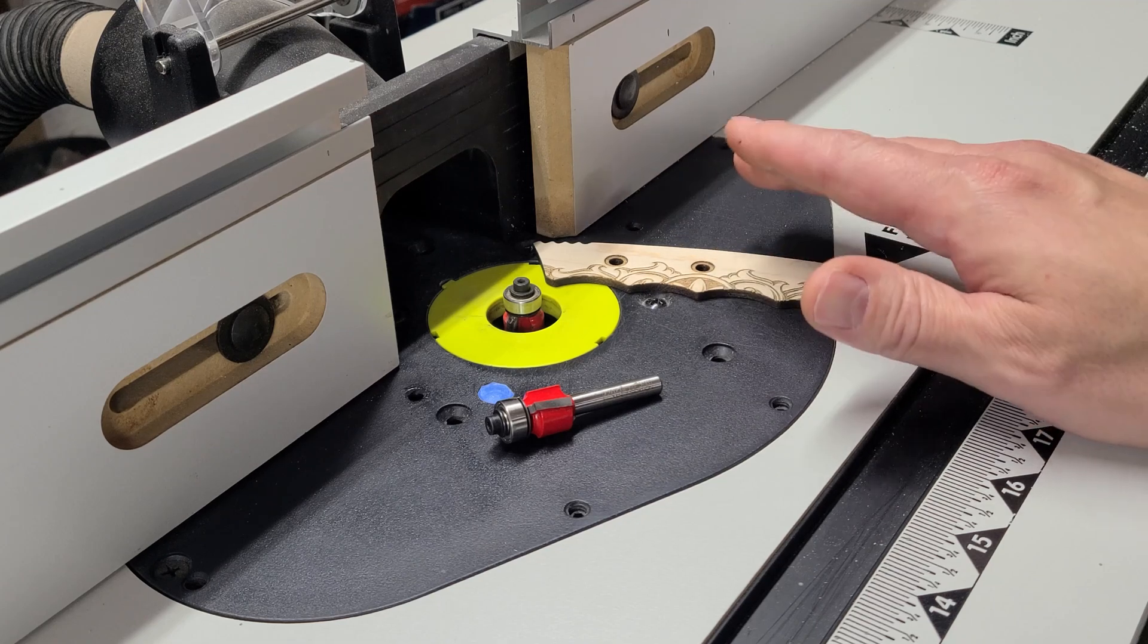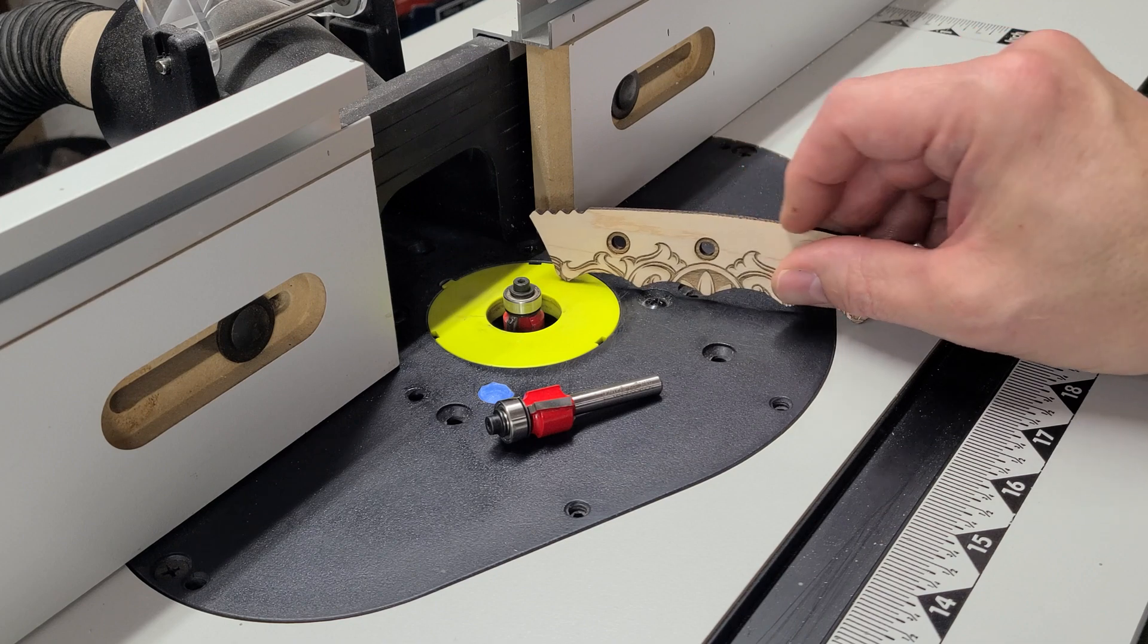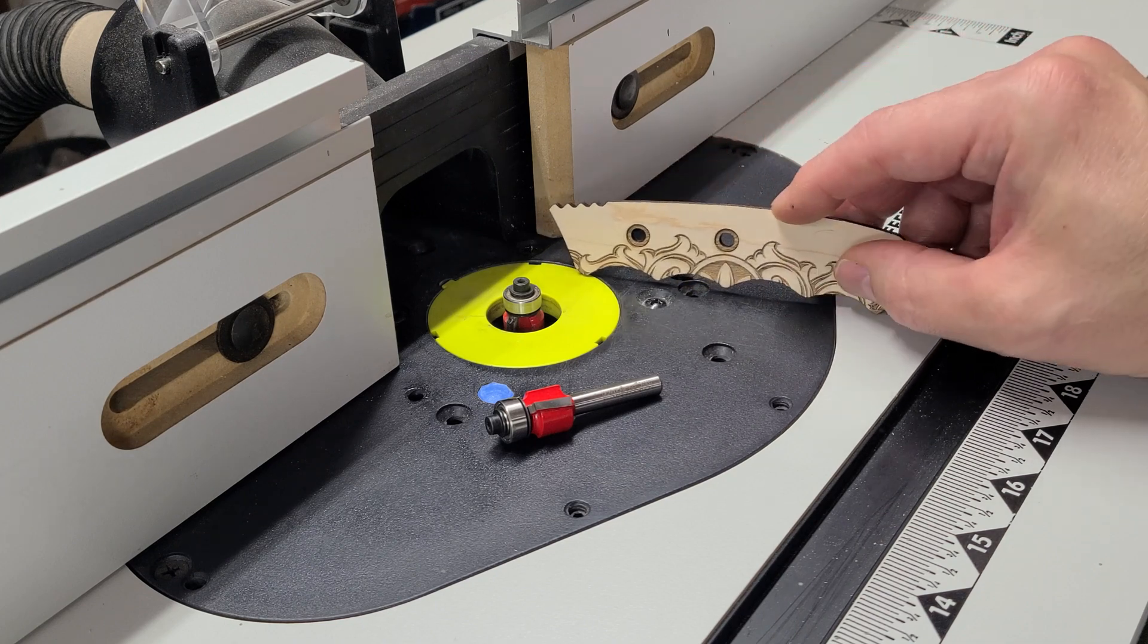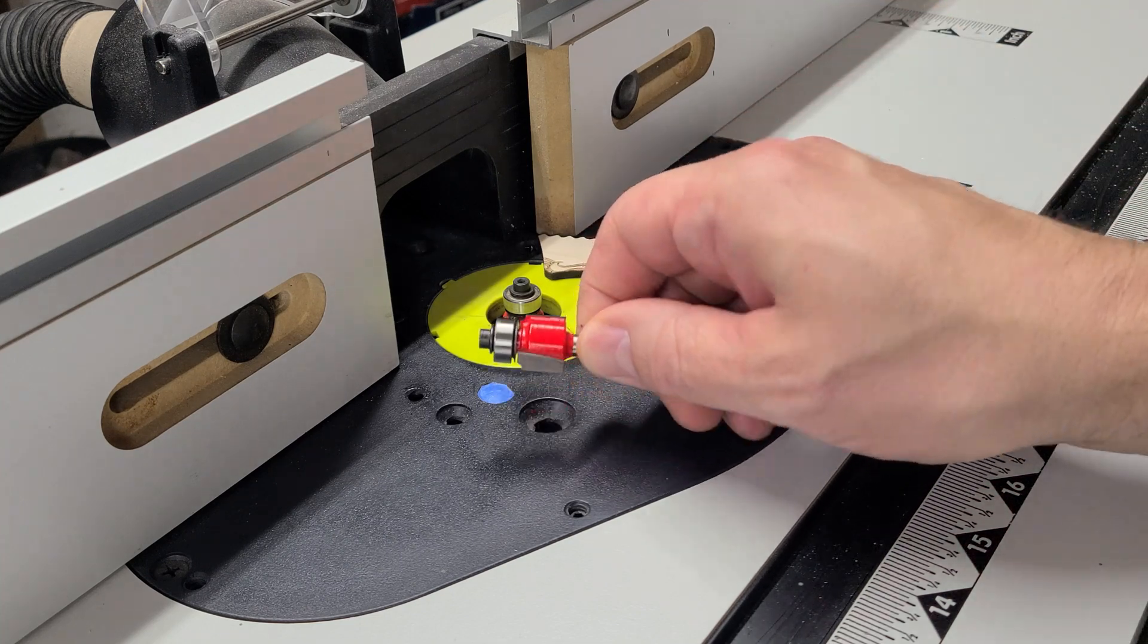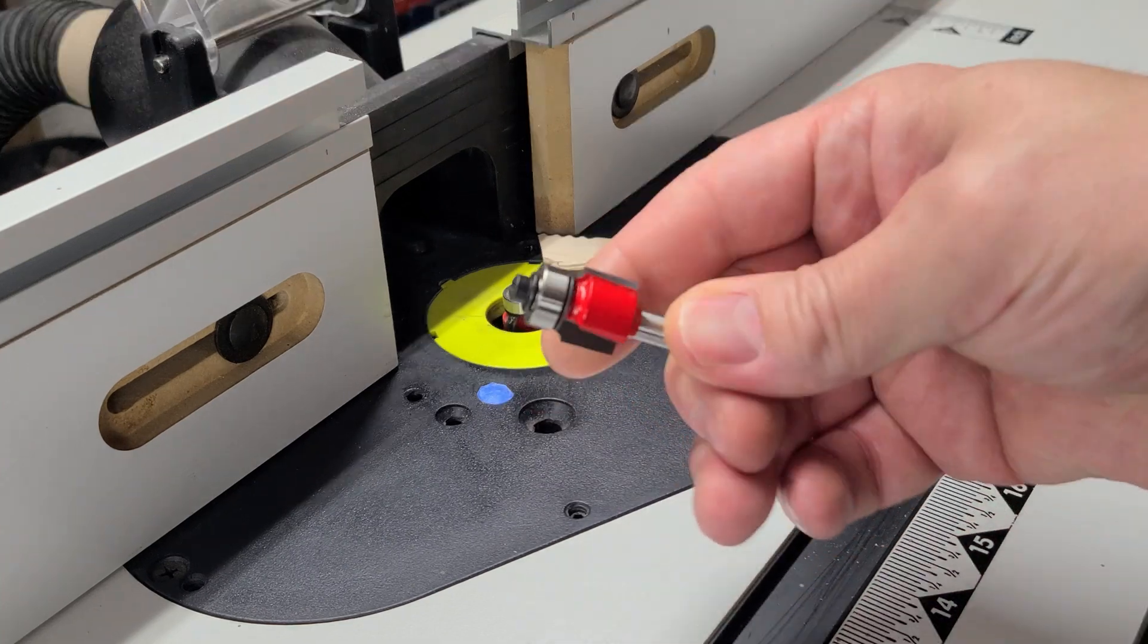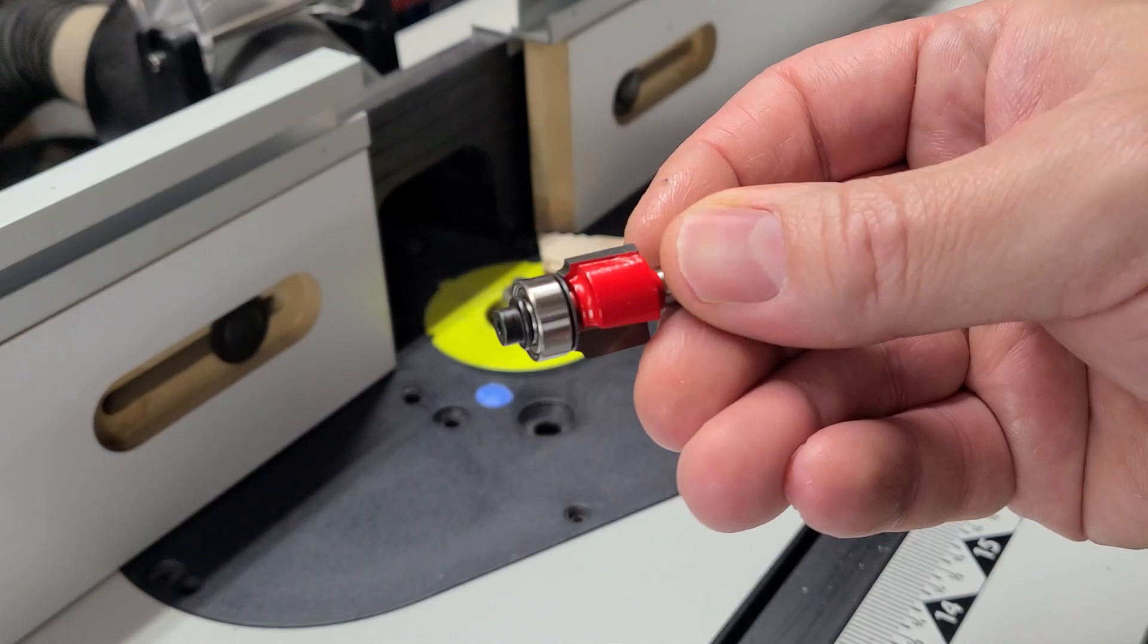Now that the scales are all cleaned, I'm going to use my router table to round over the edges of the scale. This part is optional but it does give the handle a more comfortable fit in your hand. For the router bit I'll be using a one-sixteenth radius round over bit.